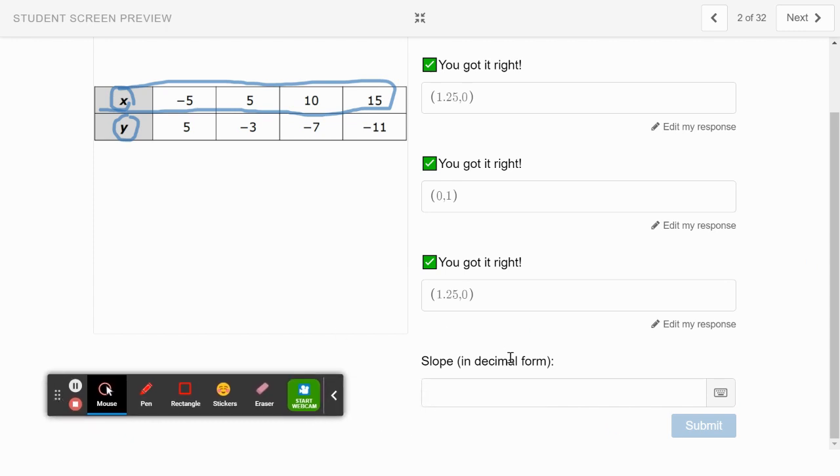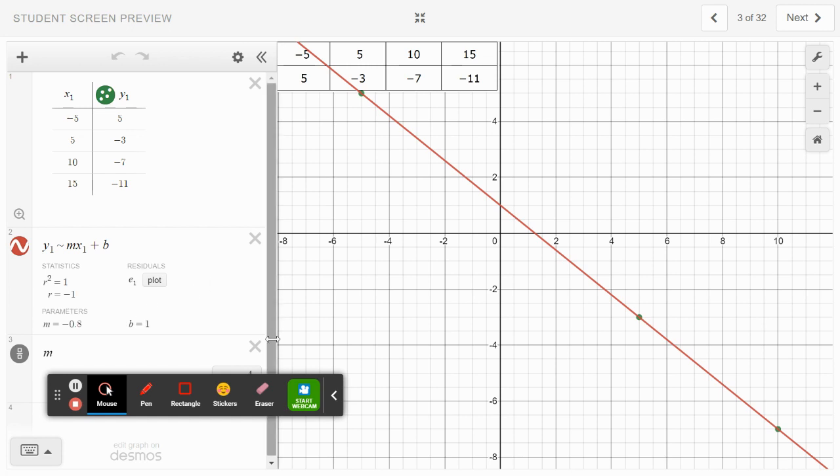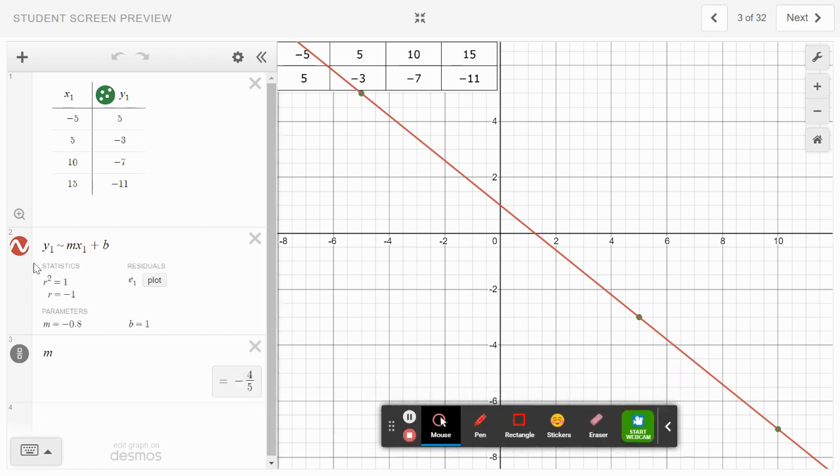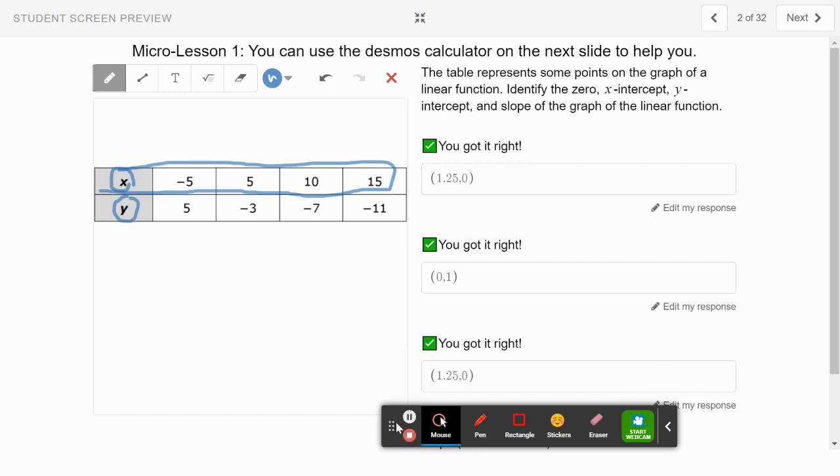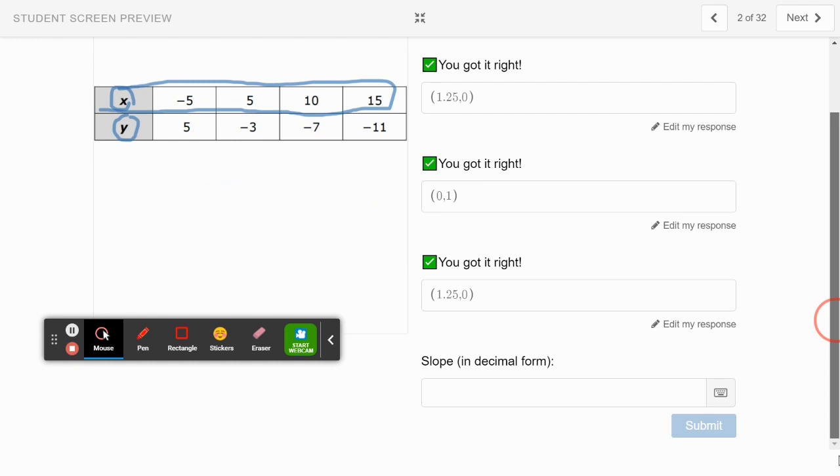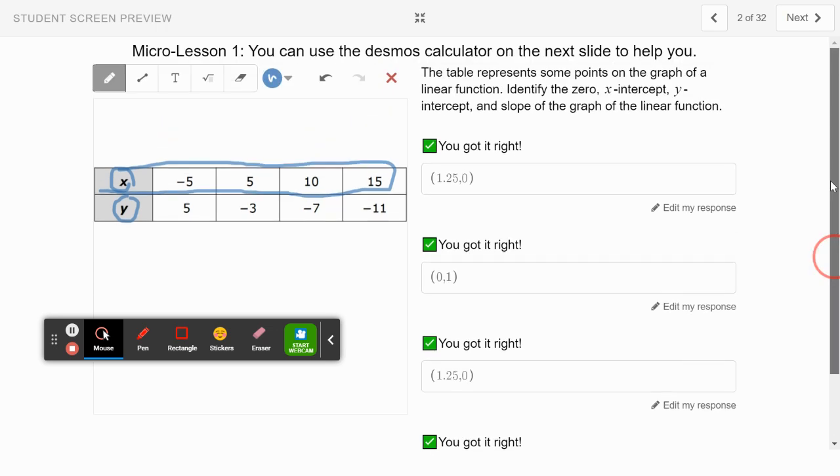Then it asks for the slope. The slope in our equation—we found the m value using this equation. The slope is negative 4 over 5 or negative 0.8. When it goes over here, it wants it in decimal form, so let's put our answer as negative 0.8. Great! We got all our values for this problem.